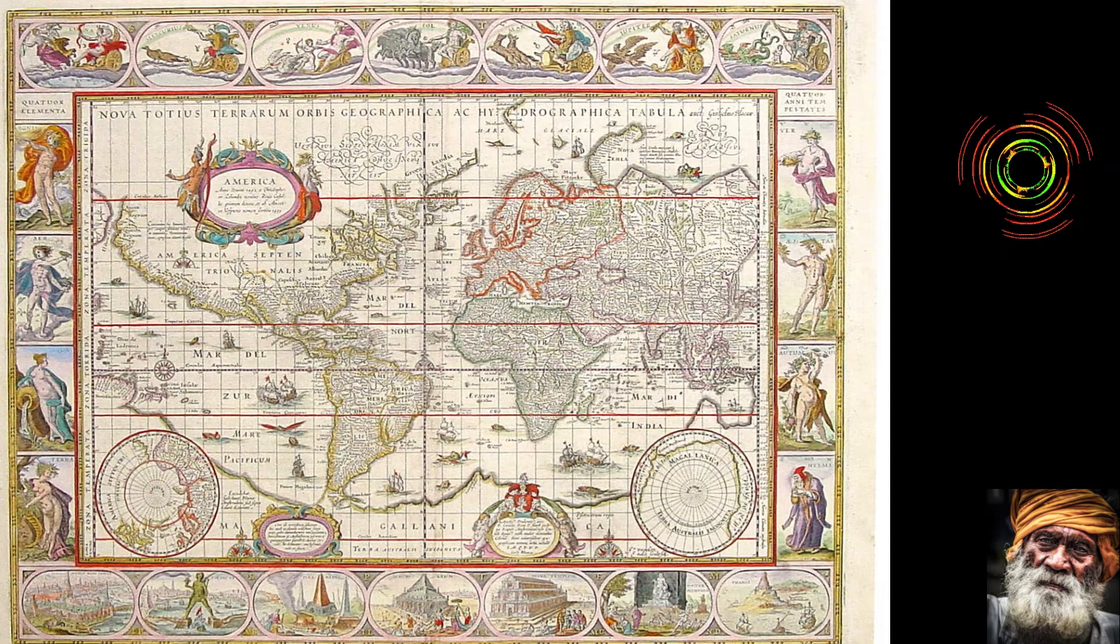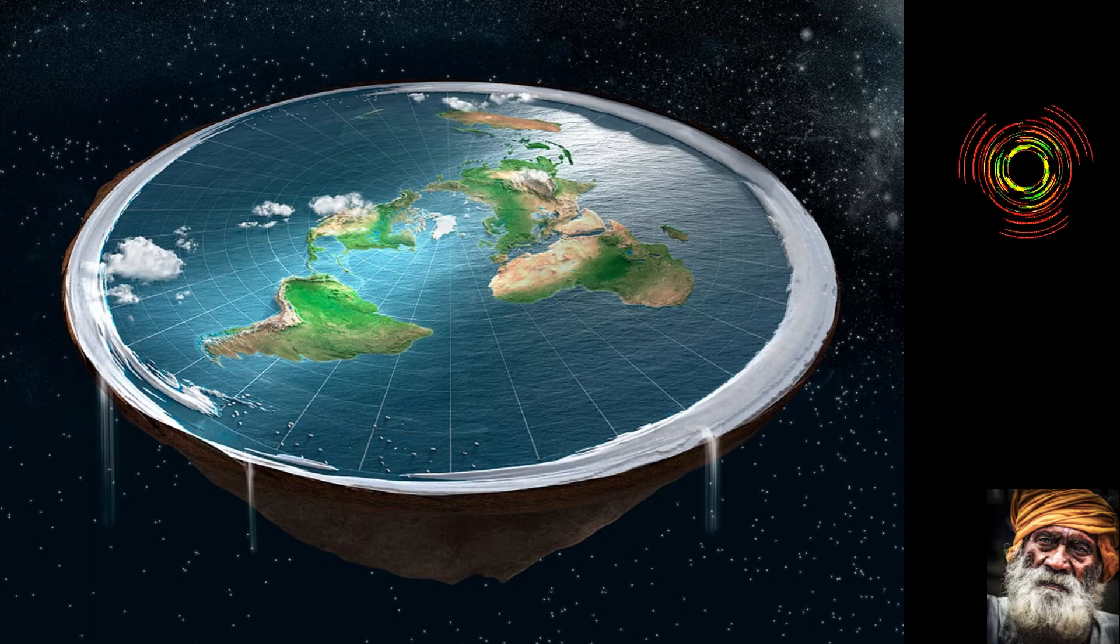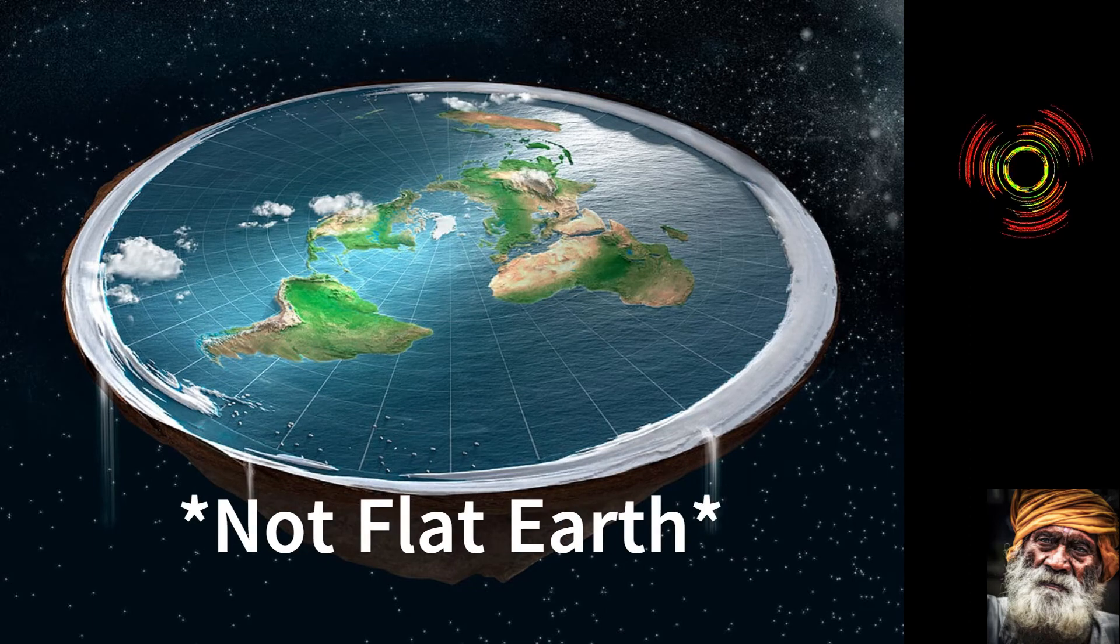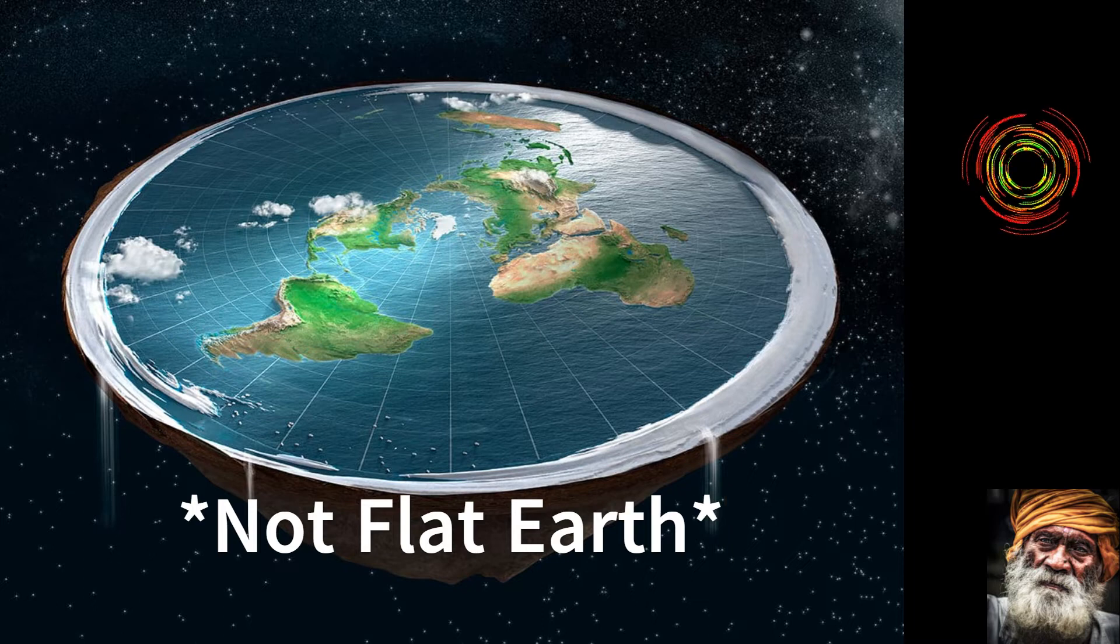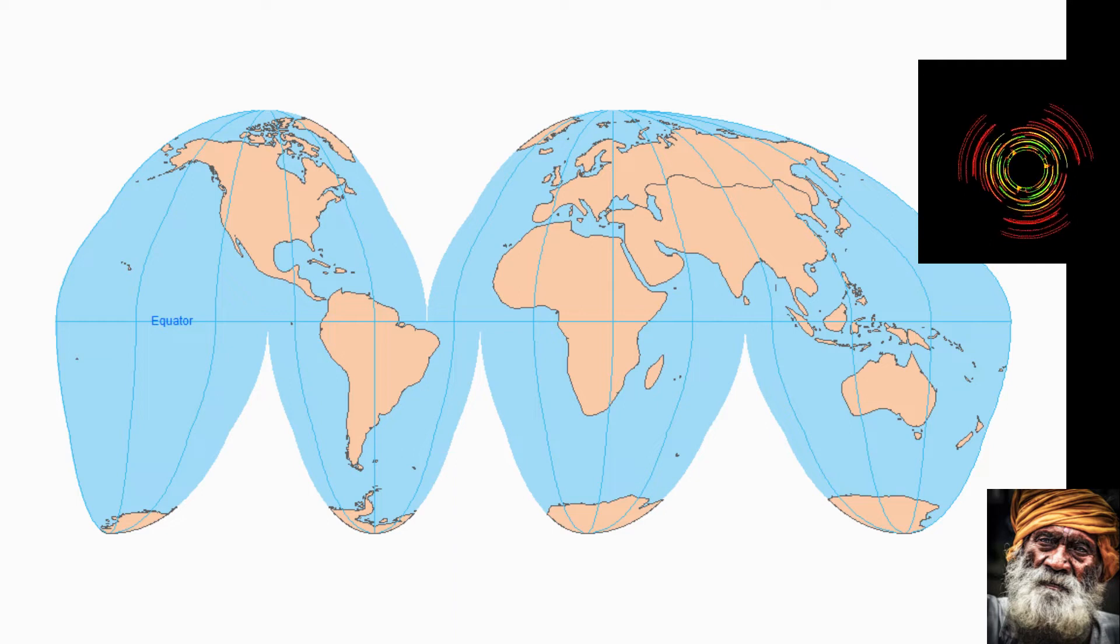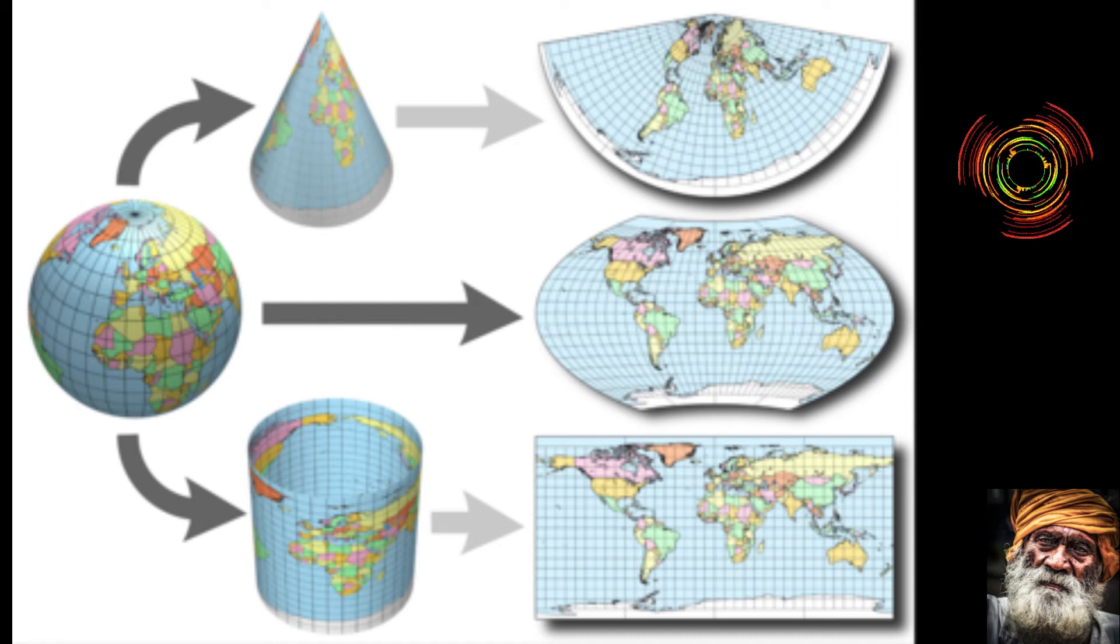One fun fact: early explorers often filled the uncharted territories with fanciful illustration of sea monsters and mythical lands. Let's talk about flattening the globe. You know, flattening a 3D globe onto a 2D map is not easy. It's like trying to peel an orange and lay the peel flat without tearing it. This process, called map projection, always involves some distortion.